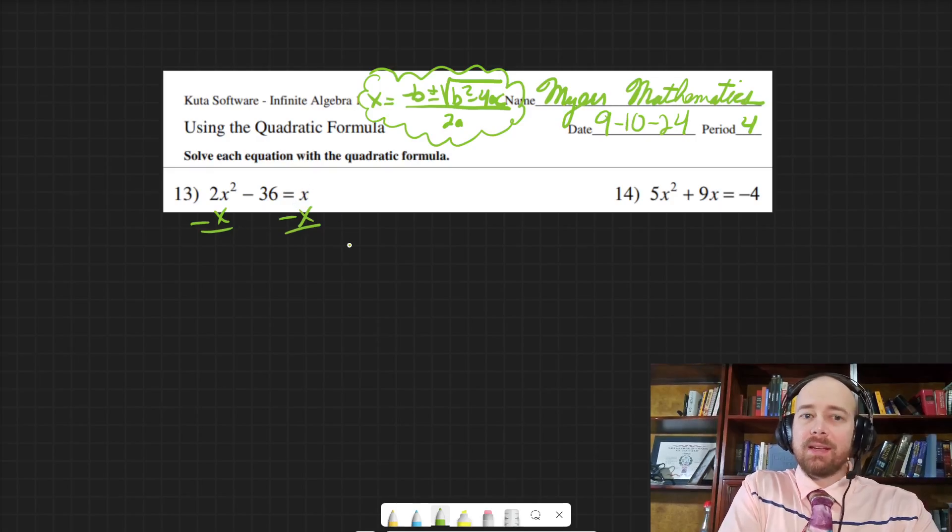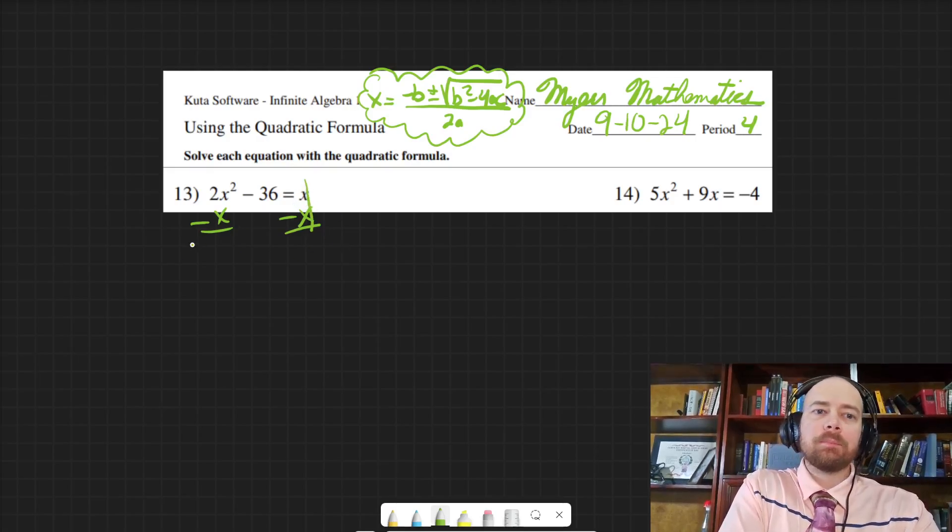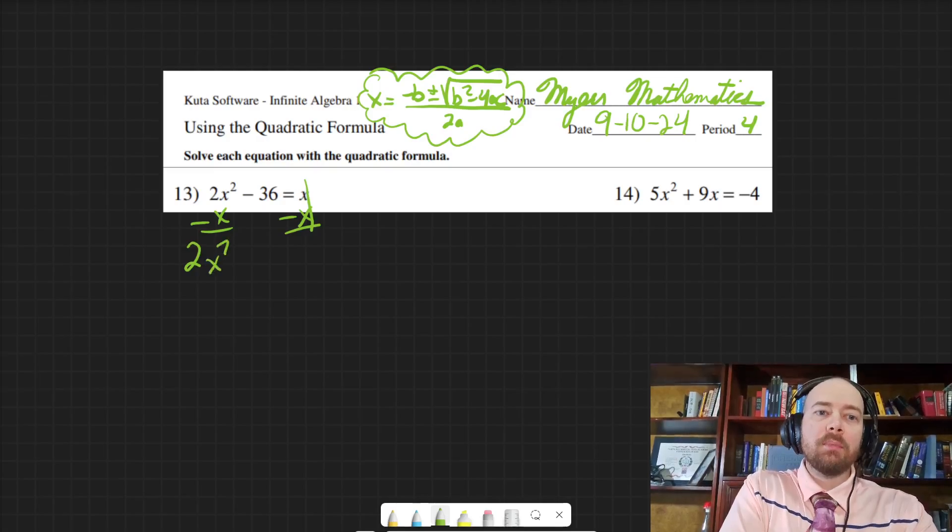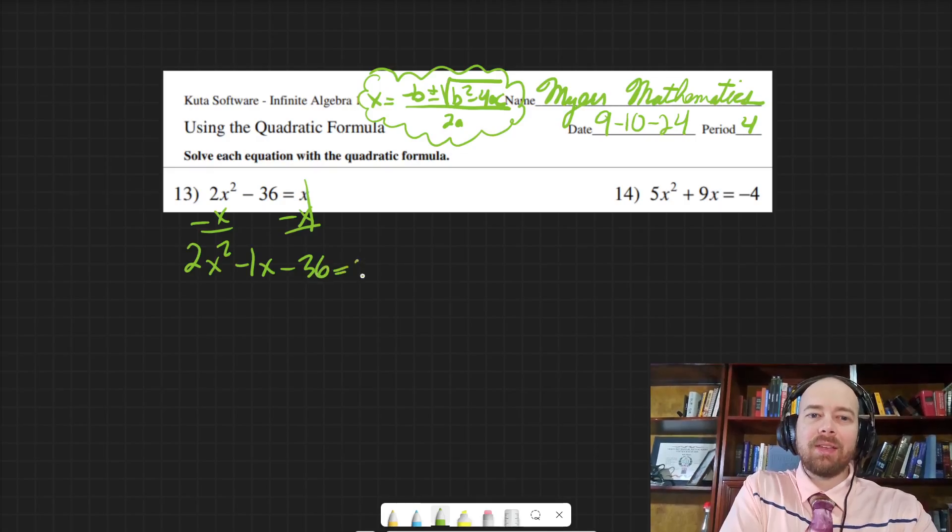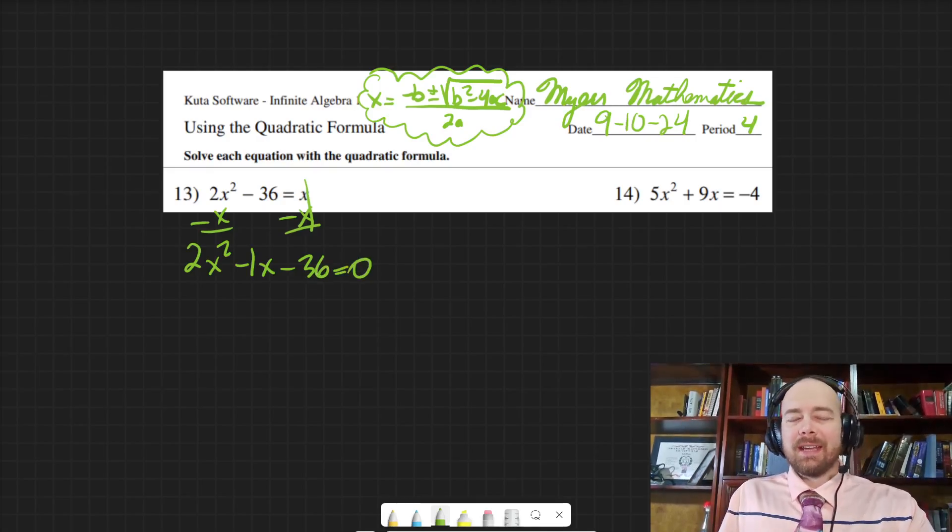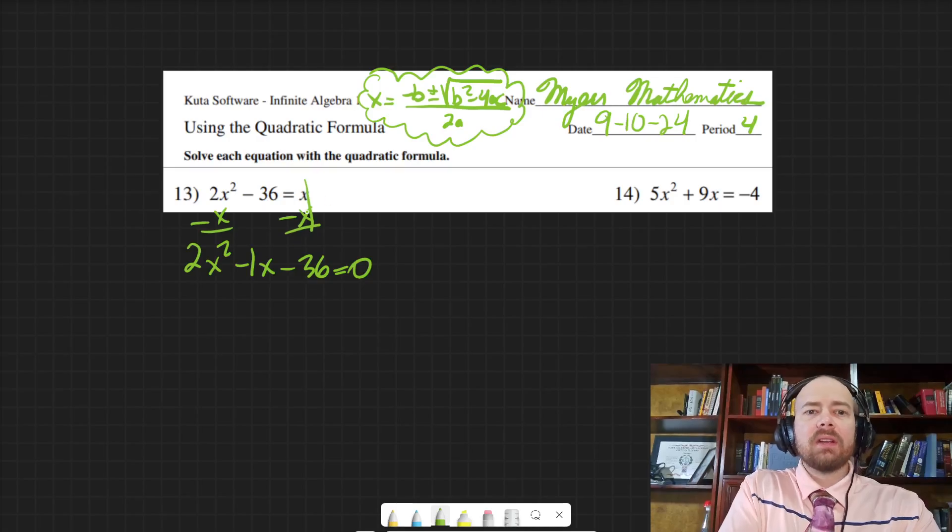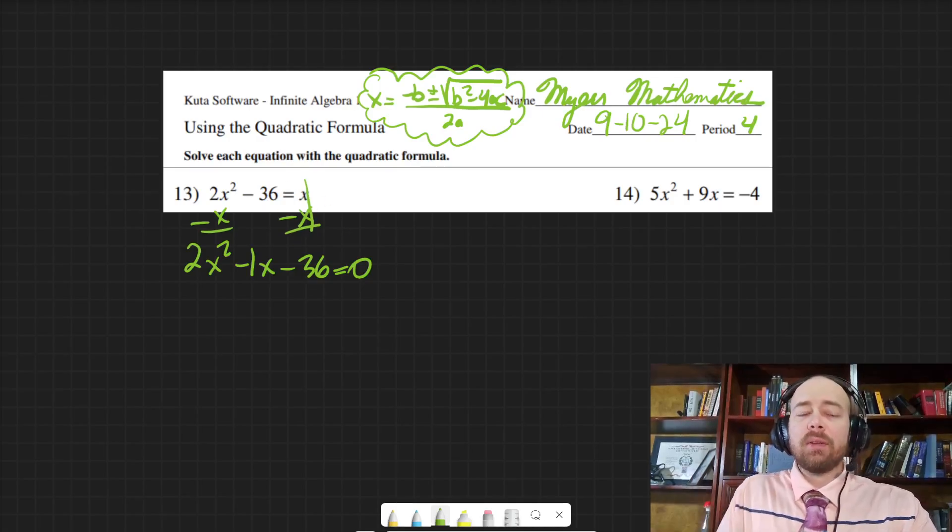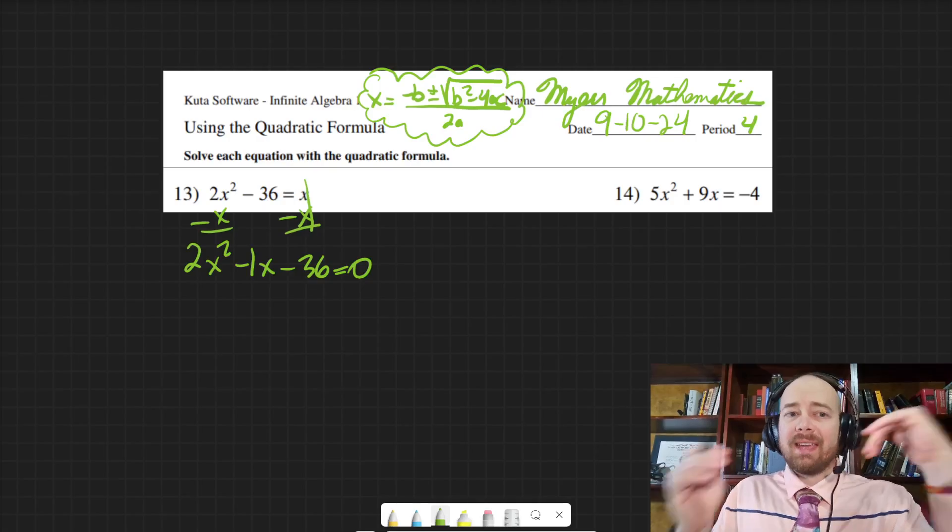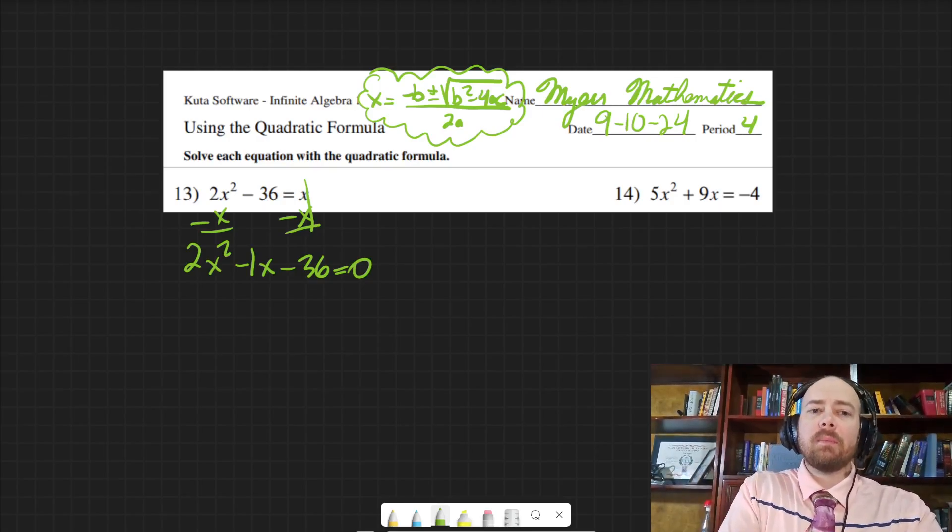When we use the quadratic formula, you got to make sure it's equal to zero. So I need to move everything over. And when I say move, I don't mean actually move the x over, because I need to subtract it on both sides to get it to cancel. So sometimes when people say you got to move it over, it's just sort of a figure of speech and not really like a math thing.